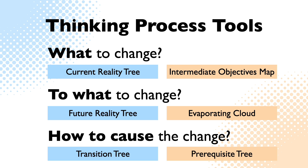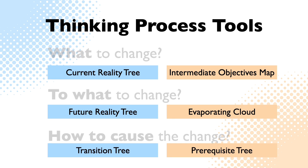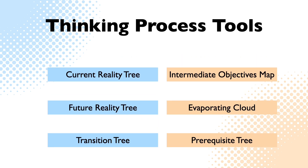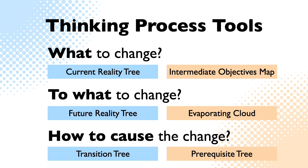The basis of the thinking process tools is two ways of reasoning about cause and effect, known as sufficient cause thinking and necessary condition thinking. Three of these tools are based on sufficient cause thinking and the other three are based on necessary condition thinking. As you can see, each tool has its place in answering these essential questions. And all of these tools use the same simple visual diagramming language to make the chains of reasoning clear and easy to communicate.